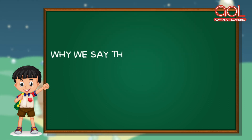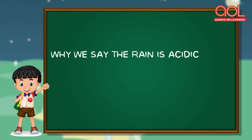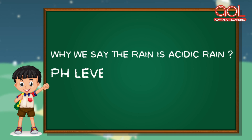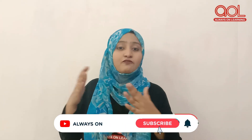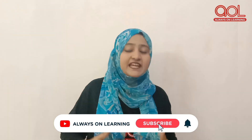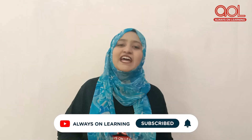Why do we say the rain is acid rain? When the pH level is less than 5.6, then that rain is called acid rain.